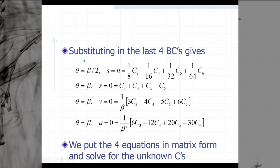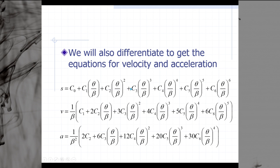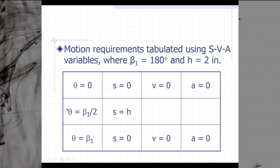We do the same thing for the other two rows in our table. We substitute in the last four boundary conditions as follows. When theta is equal to beta over 2 or 90, we are at the end of our rise. So s is equal to h, which is equal to 1/8 c3 plus 1/16 c4 plus 1/32 c5 plus 1/64 c6. Let's take a look back at our equation for s to see where these values come from. We found that c0, c1, and c2 are all 0, and so we're starting with c3. We know that s is equal to h when we plug in theta equal to beta over 2.